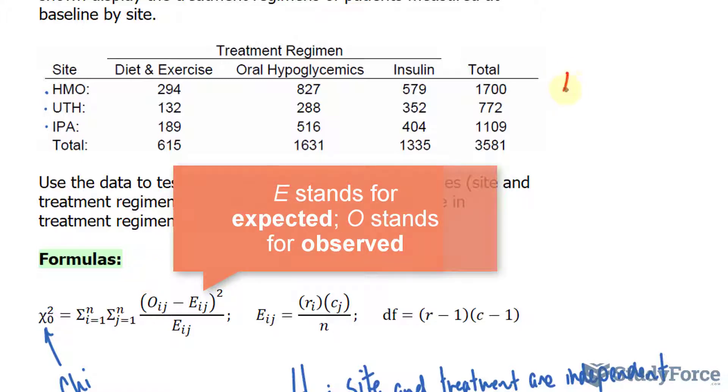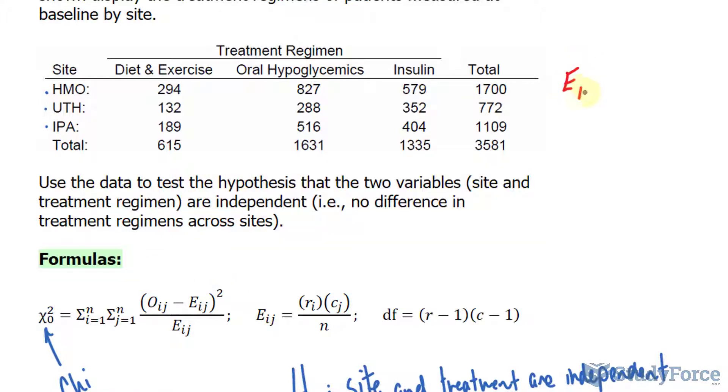For example, if we wanted to calculate row one, column one, we would use this value and that value. Let's go ahead and calculate that right now. One thousand seven hundred times six hundred and fifteen, and the n value represents the grand total, which is three thousand five hundred eighty-one. So we'll do this again. Let me show you a few more that way you get the hang of it.